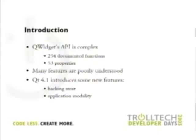QWidget's API is probably the most complex one in all of Qt, even though it's the most fundamental API. We have something like 254 functions and 53 properties. So many of these features are poorly understood — we get several bug reports related to backgrounds and things like that. For example, "I'm setting this color on this button and nothing happens." So I hope that after today's talk, you have a better understanding of how QWidget really works.